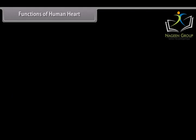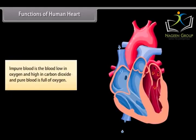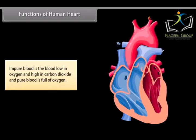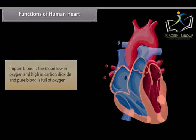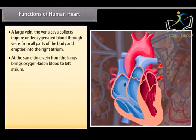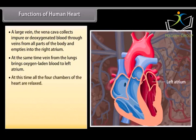Functions of human heart: Impure blood is the blood low in oxygen and high in carbon dioxide and pure blood is full of oxygen. A large vein, the vena cava, collects impure and deoxygenated blood through veins from all parts of the body and empties into the right atrium. At the same time, vein from the lungs brings oxygen-laden blood to left atrium. At this time, all the four chambers of the heart are relaxed.